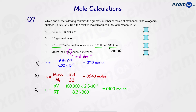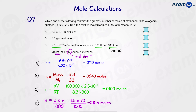Finally, for part D, we have a solution — the big M represents moles per decimetre cubed. We work out moles by doing concentration times volume. Note that the volume is in centimetres cubed, so divide by 1000. That gives us 0.105 moles. Therefore A is the answer — the largest number of moles.